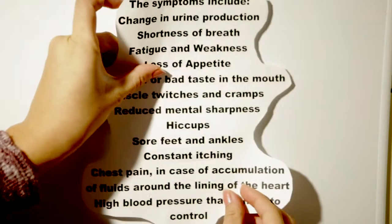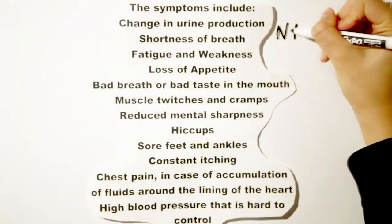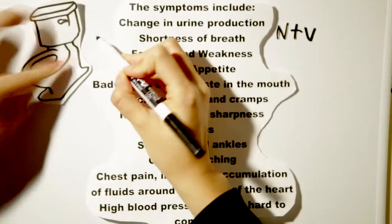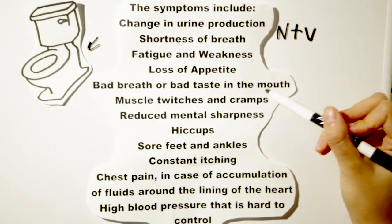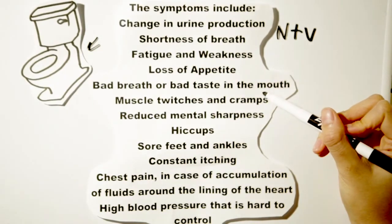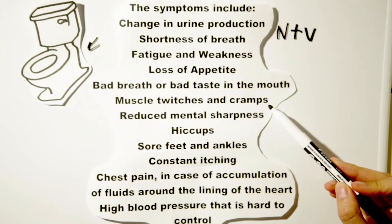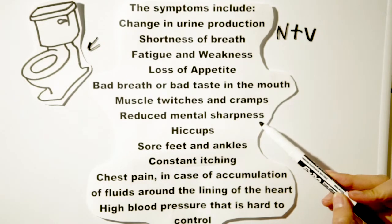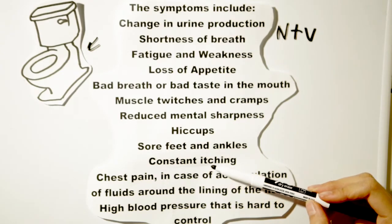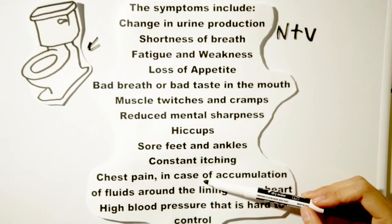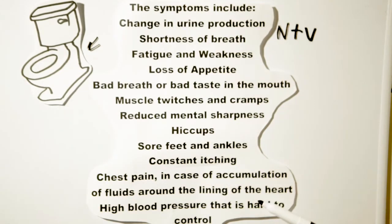The signs and symptoms usually appear in the advanced stages of kidney failure. These symptoms include nausea, vomiting, changes in urine production, shortness of breath, fatigue and weakness, loss of appetite, bad breath or bad taste in the mouth, muscle twitches and cramps, reduced mental sharpness, hiccups, sore feet and ankles, and constant itching.